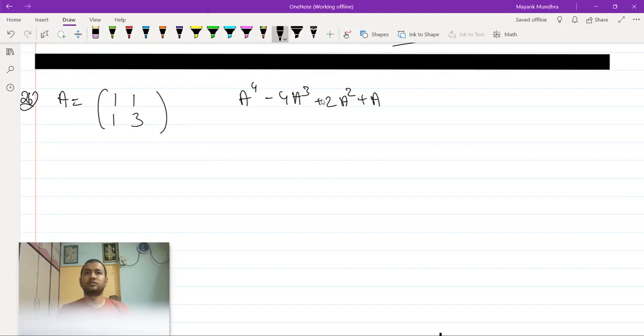So this is basically equal to A times of (A cube minus 4A square plus 2A plus I). So let us just find out these different things.